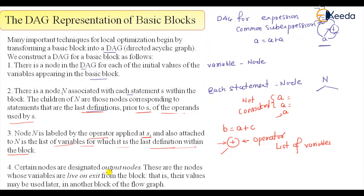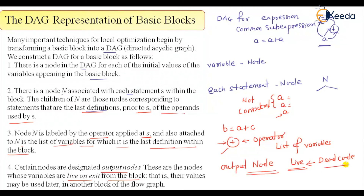Certain nodes are designated as output nodes. These are the nodes whose variables are live or exit from the block — the nodes which will be live. As we told you, live variable analysis is for dead code elimination, and those will be your output nodes whose value will be used later. A live variable is one whose value may be used later in another block or in the flow graph, and we call that a live value.